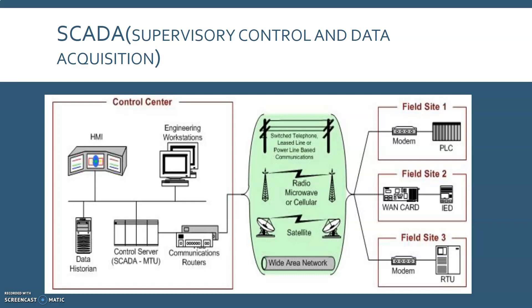Based on the sophistication and setup of the individual system, control of any individual system or task can be automatic or it can be performed by operator commands. If we look into the typical hardware included in the SCADA system as shown in the figure, it consists of a control center, communication requirements, and the field side. The control center consists of a control server placed at the control center.